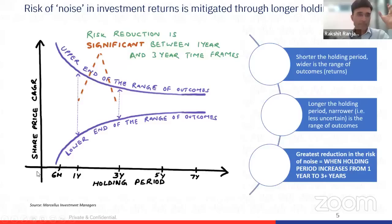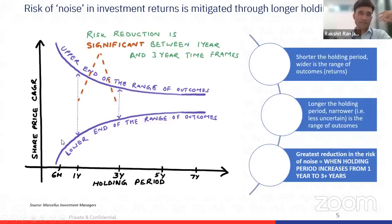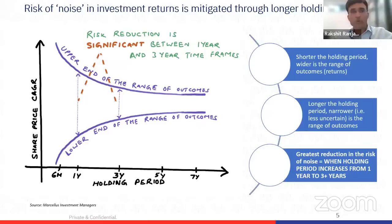That's where the long-term piece becomes very interesting. This chart has the time period of holding a particular stock, index, or portfolio on the horizontal axis, and the range of outcomes for a particular time period on the vertical axis. What this chart effectively shows is that the shorter the holding period — a six-month or one-year holding period — the wider is the range of outcomes, because factors like FII outflows or DII inflows can affect share price compounding over short periods.